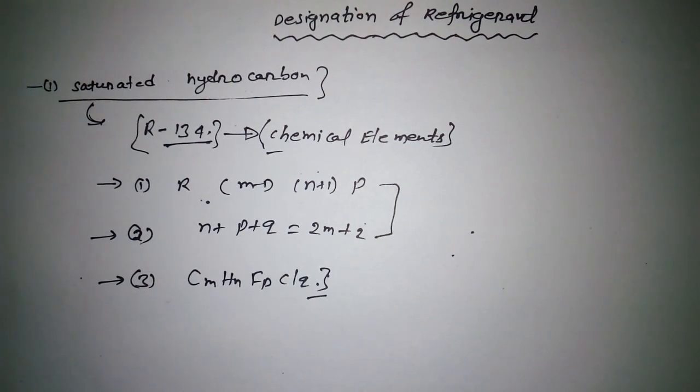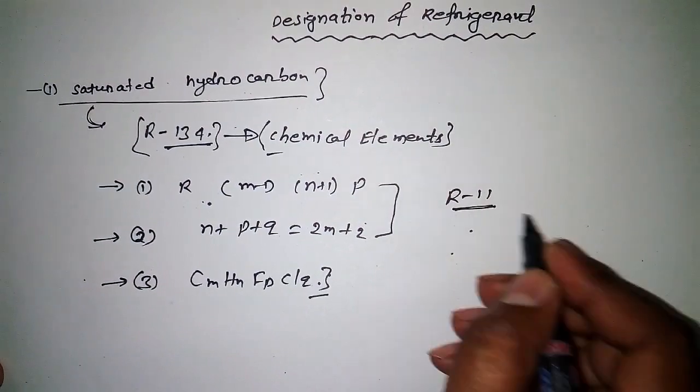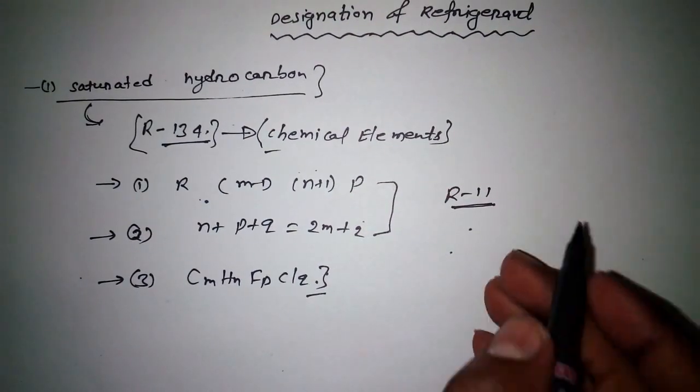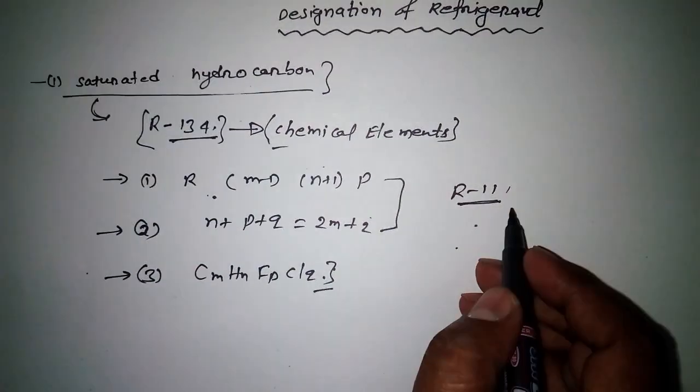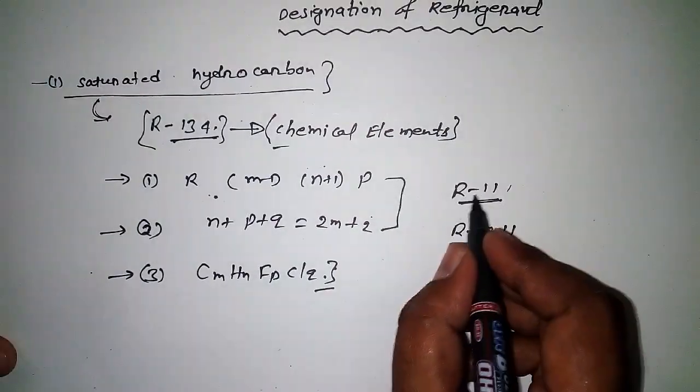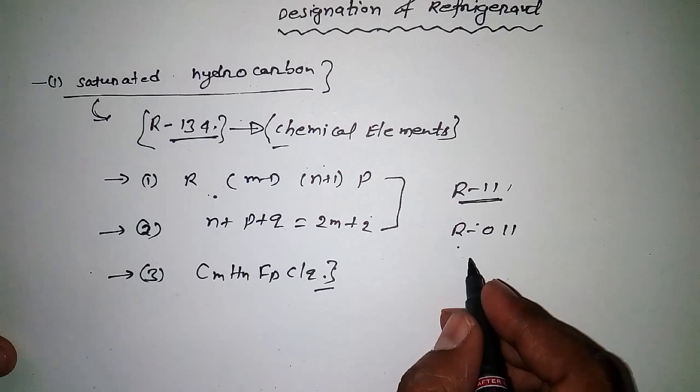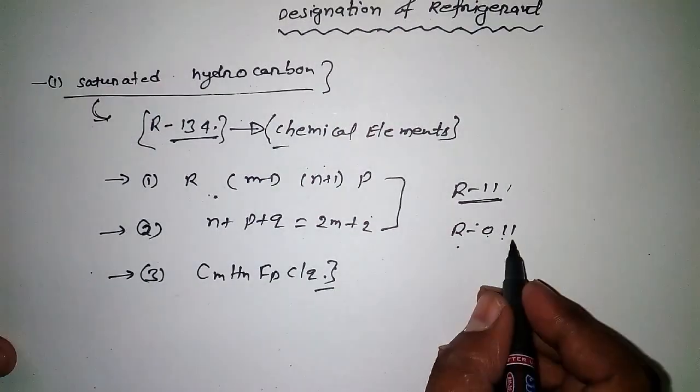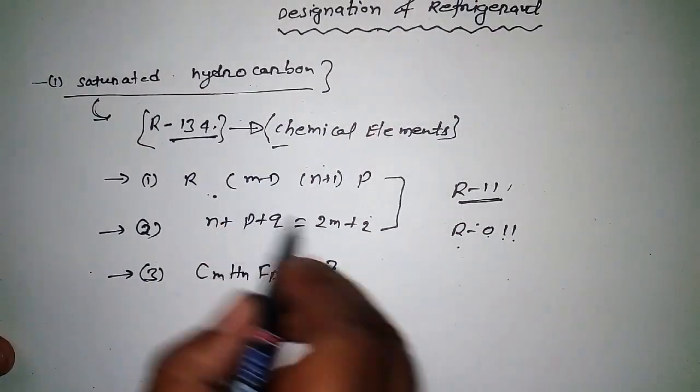Suppose we have R-11. When a refrigerant has only two digits, we add a zero to the left side. So R-11 becomes R-011. Now we can compare these numbers with the formula.